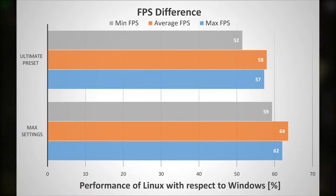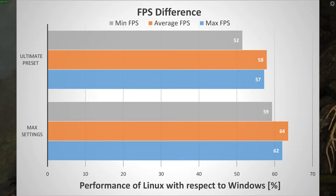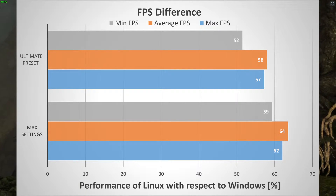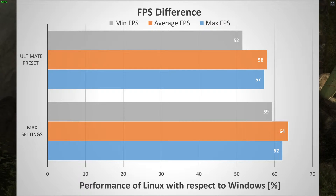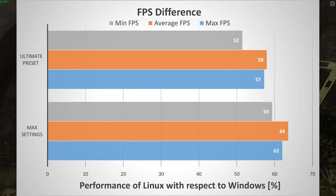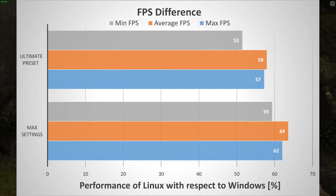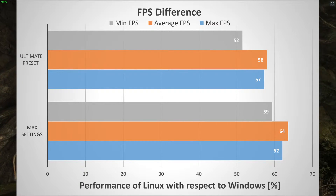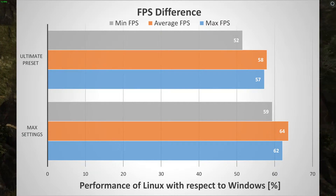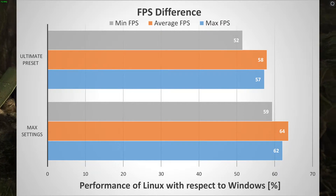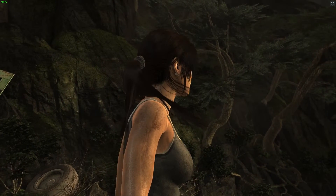I'm going to do what I did for Tomb Raider here also for Doom, once that comes out for Linux and once the Vulkan support has been patched in. I'm really curious on how that one performs, because Doom runs exceptionally well — it's really astounding how well that game is optimized, quite astonishing, and it looks absolutely beautiful.